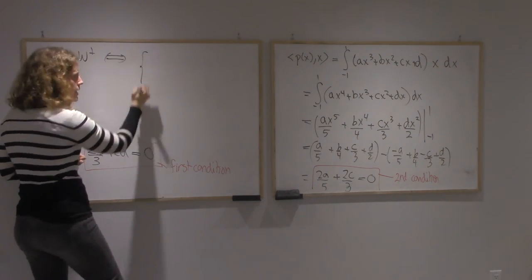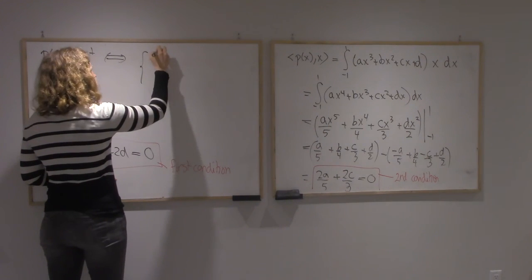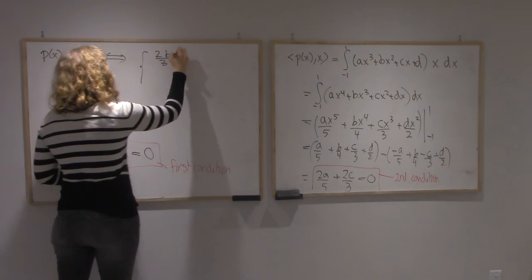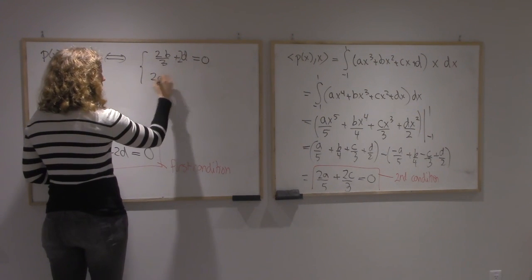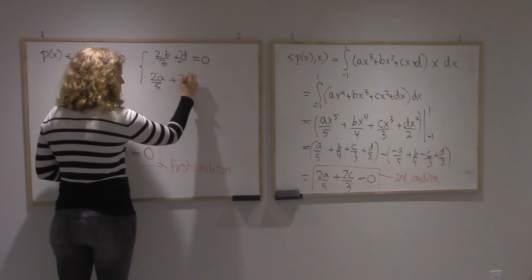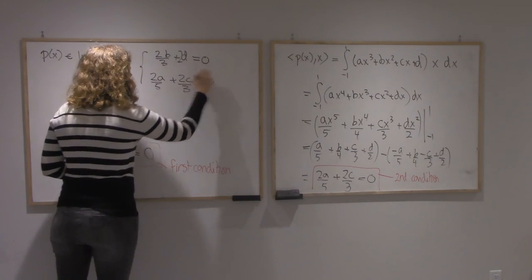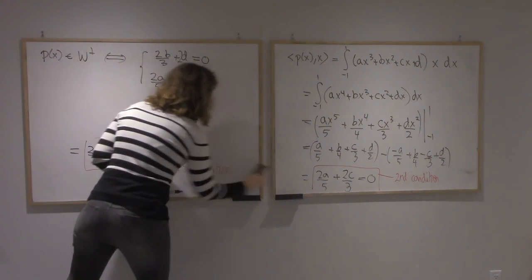So we need this one: 2B/3 + 2D to be 0. And we need that one: 2A/5 + 2C/3 to be 0 as well.